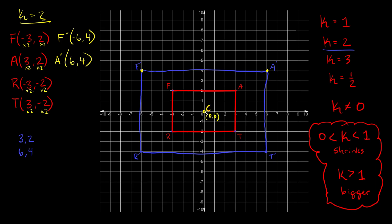It's really, really important to understand that you can only use this multiplication method when your center of dilation is at the origin, at zero comma zero. If I move the center of dilation anywhere else on the graph, this method no longer works and you'd have to use the first method of counting squares. But if your center of dilation is at the origin, you can totally use this method.